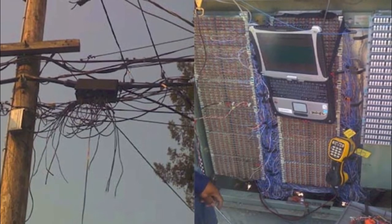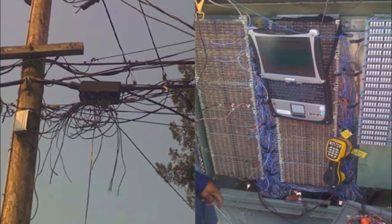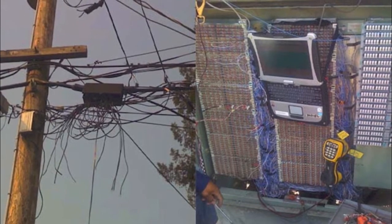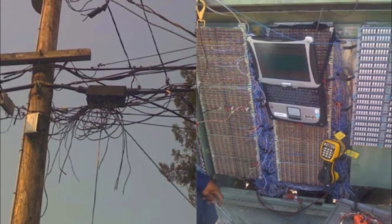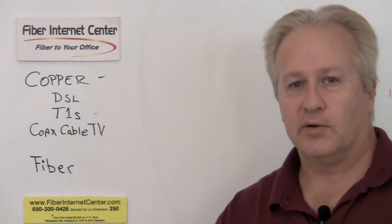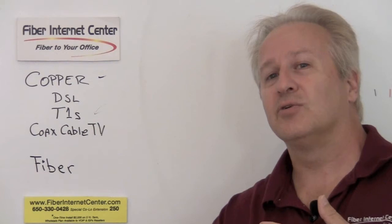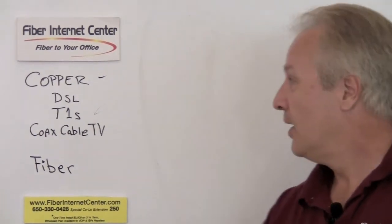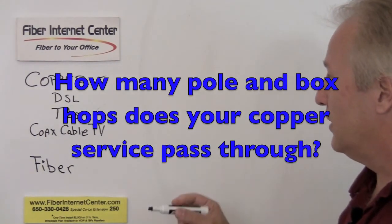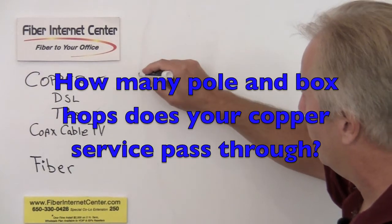By the way, if you have DSL lines, T1s, and ISDN lines all next to each other or close to each other in the same cable in your phone room or out in the street or on that telephone pole or in that box, they actually interfere with each other. The other thing that affects all of these things is the weather.